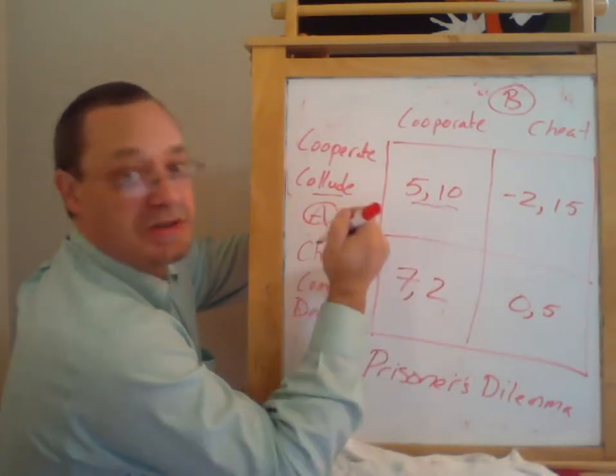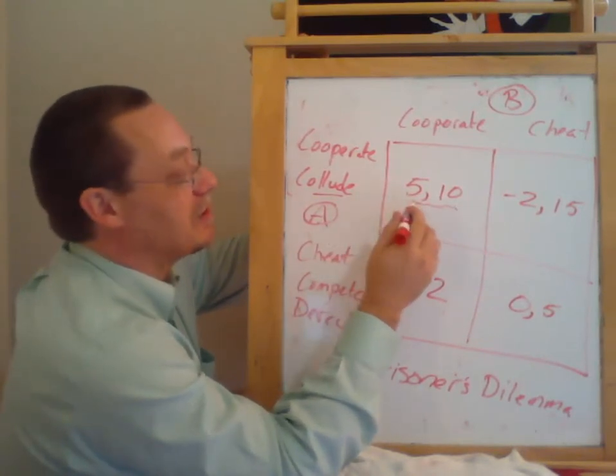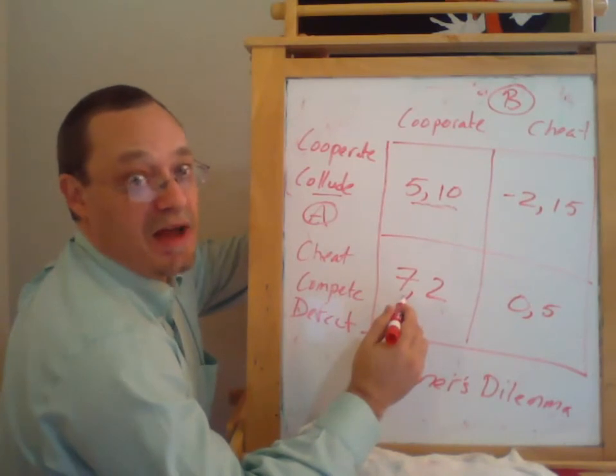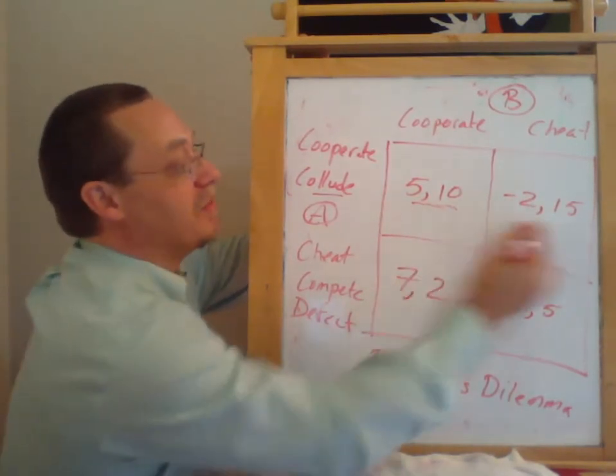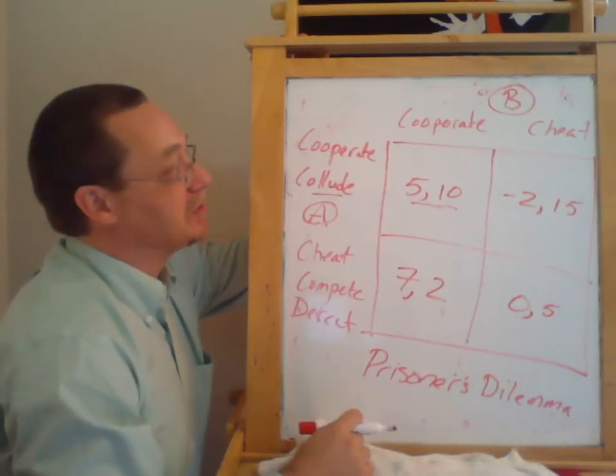But this cooperation is going to be difficult to sustain. Because if we start here, then Firm A wants to get seven instead of five. And Firm B wants to get 15 instead of ten. So it's going to be very hard to sustain that cooperation.